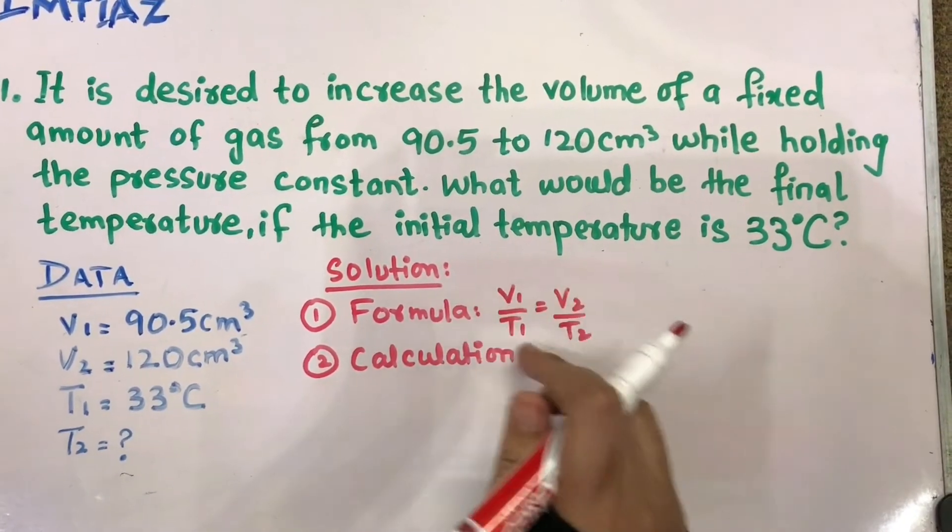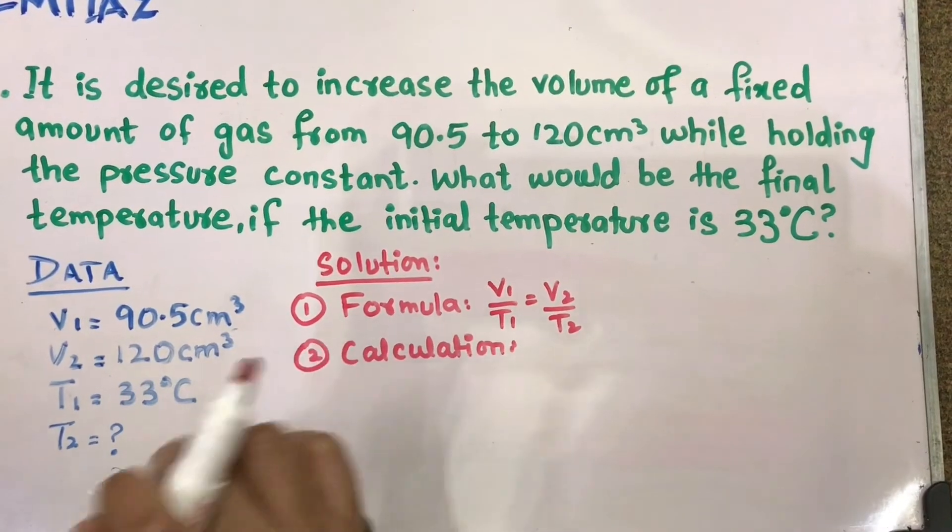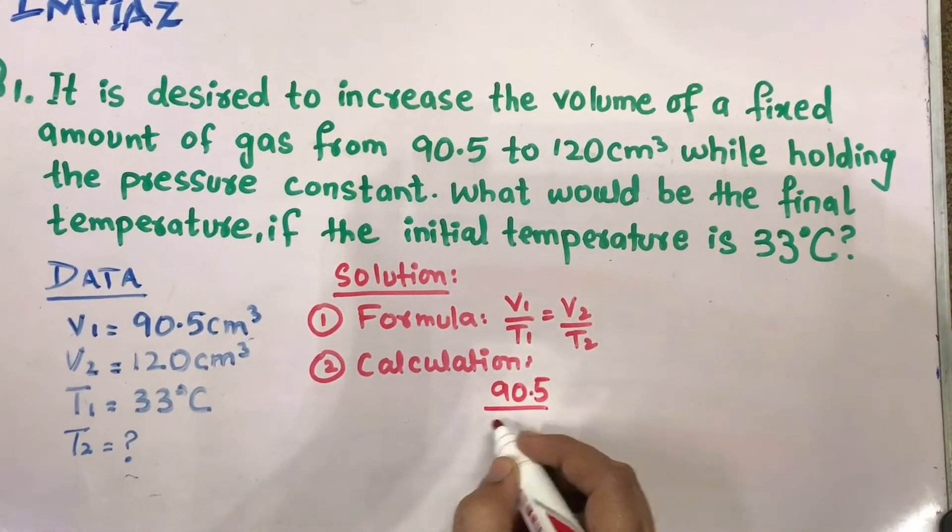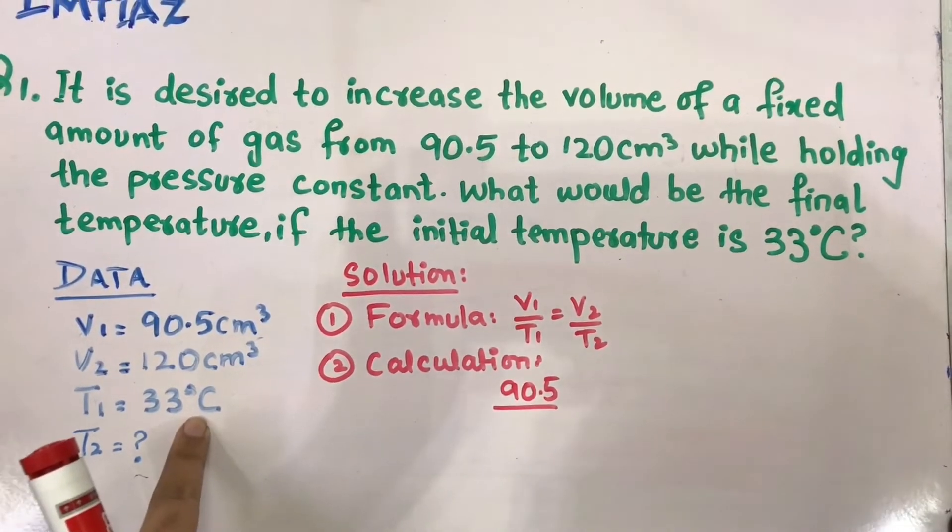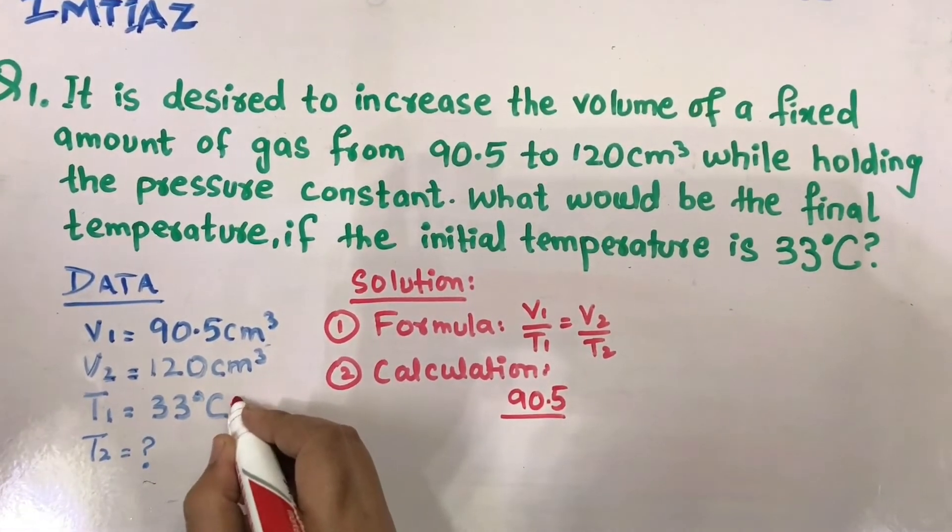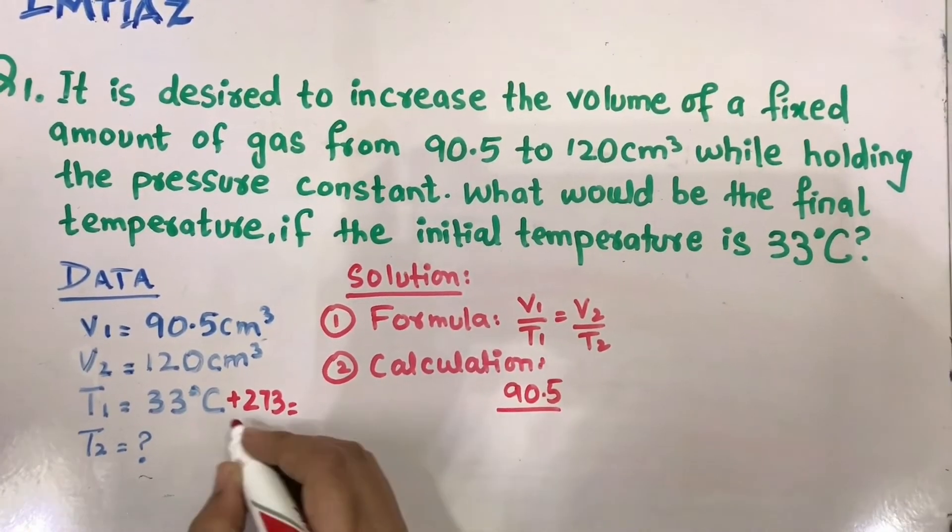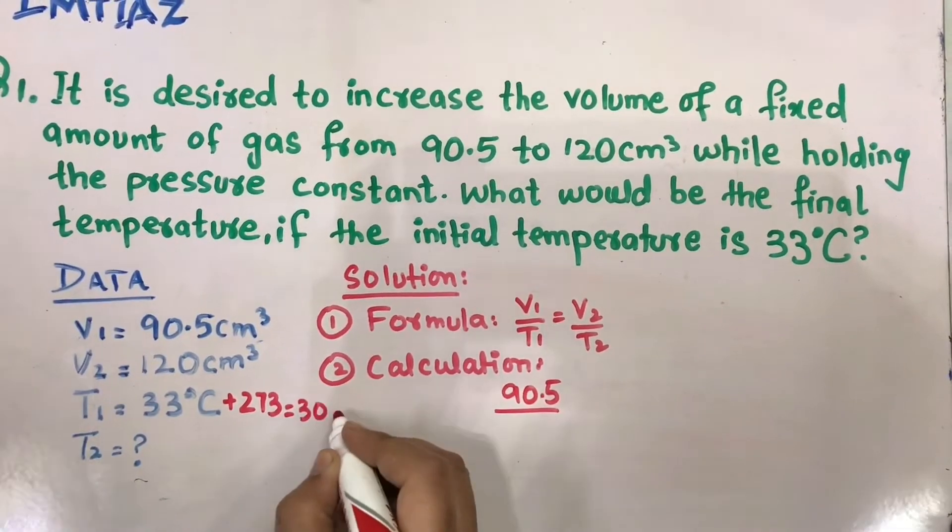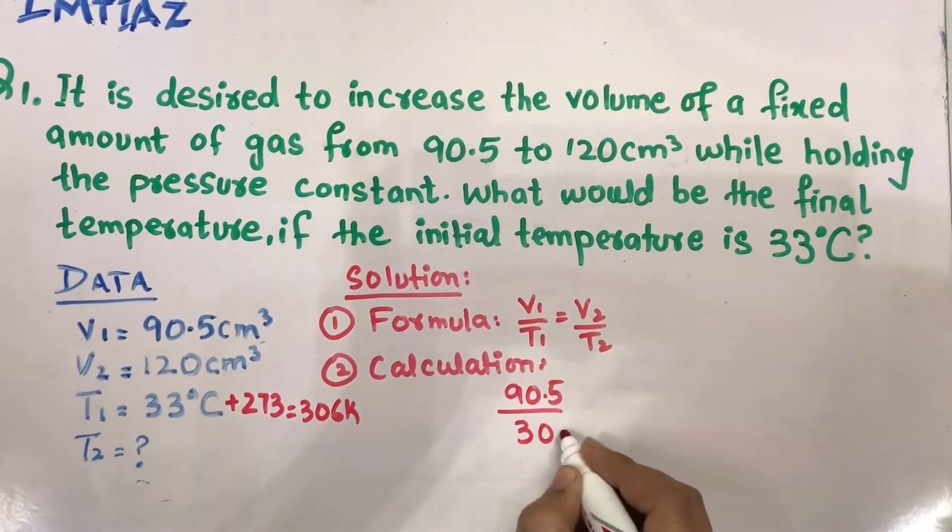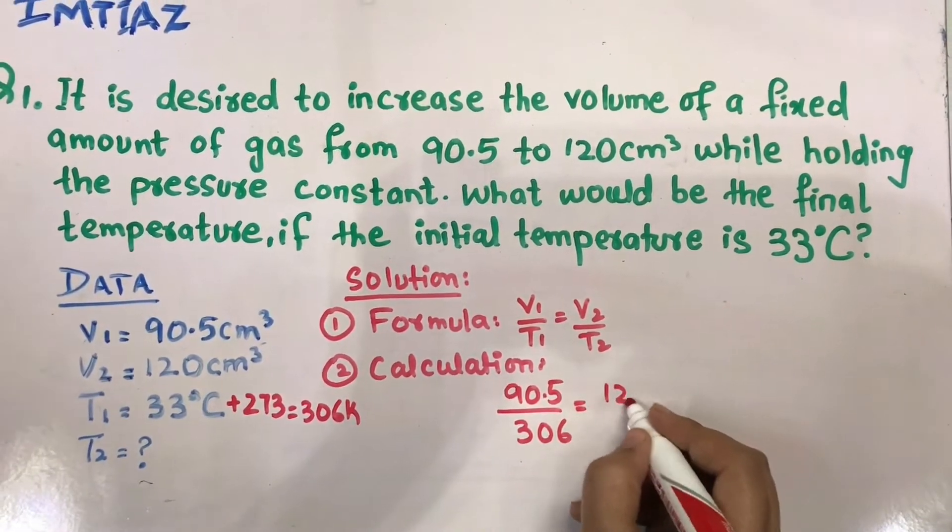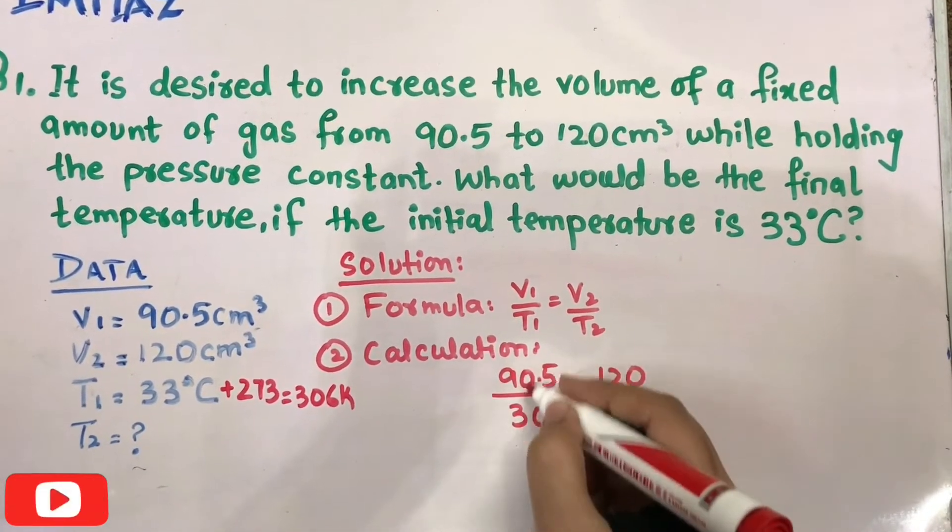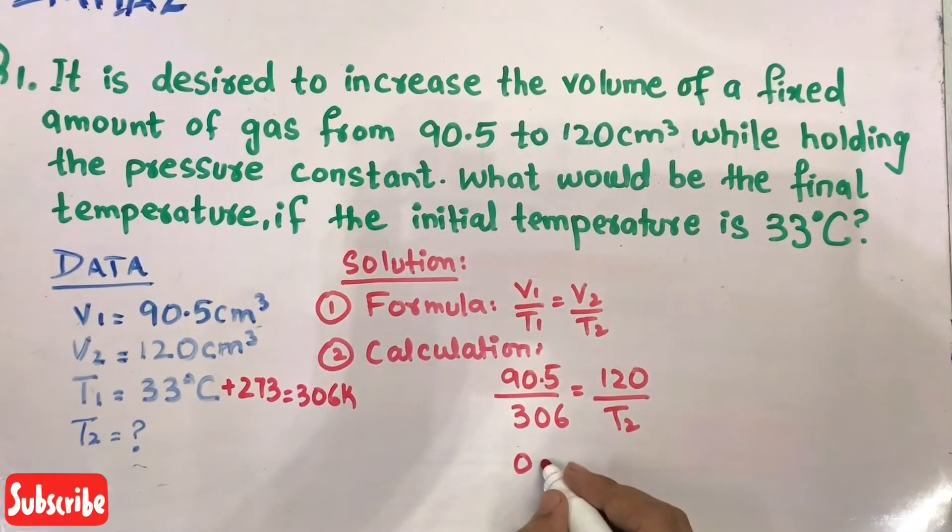V1 is 90.5, T1 is 33. You need to convert this degree Celsius into Kelvin. Always remember to convert temperature. After adding 273, you will get 306 Kelvin. So 90.5 upon 306 Kelvin equals V2 is 120 upon T2, which is required.